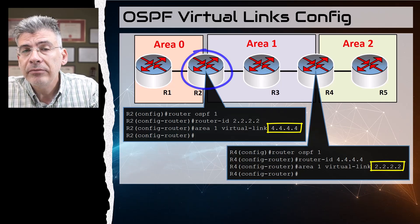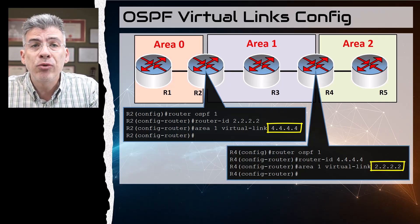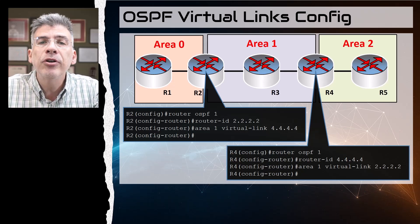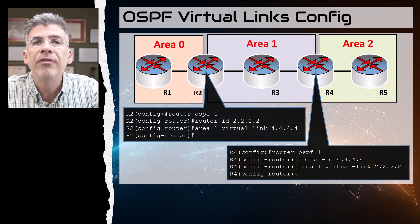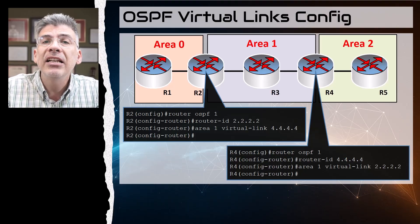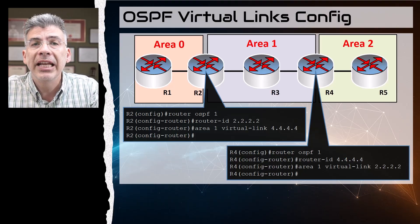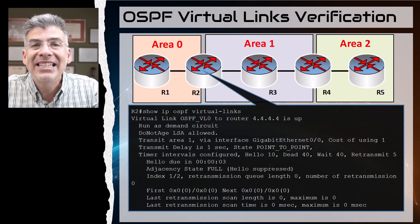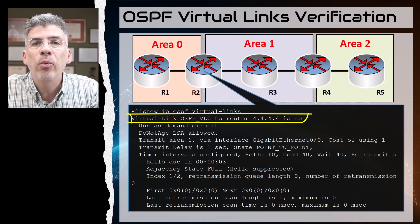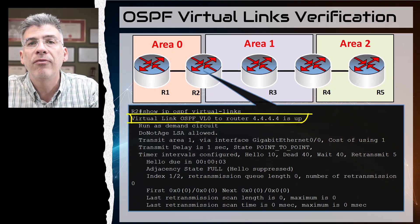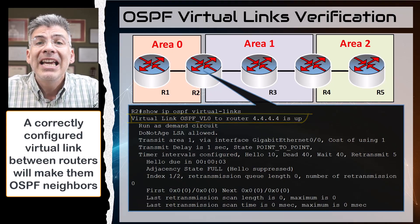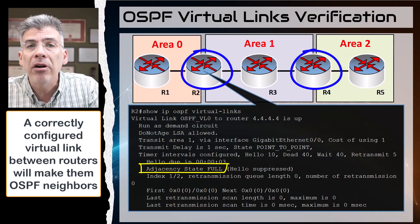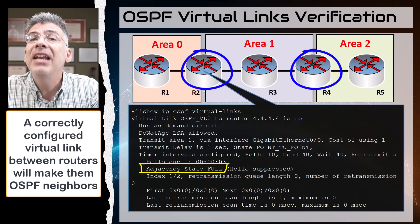And that's it. Assuming that OSPF is running between all these routers and adjacencies have been formed, this virtual link configuration will resolve the broken rule. With this command here, we can see in R2 that we have successfully created a virtual link with router 4.4.4.4. We can also see the adjacency state is full, which means that R2 and R4 are now OSPF neighbors.